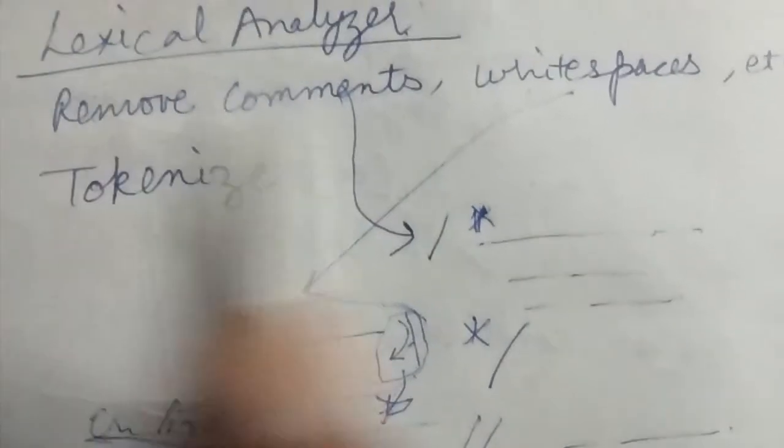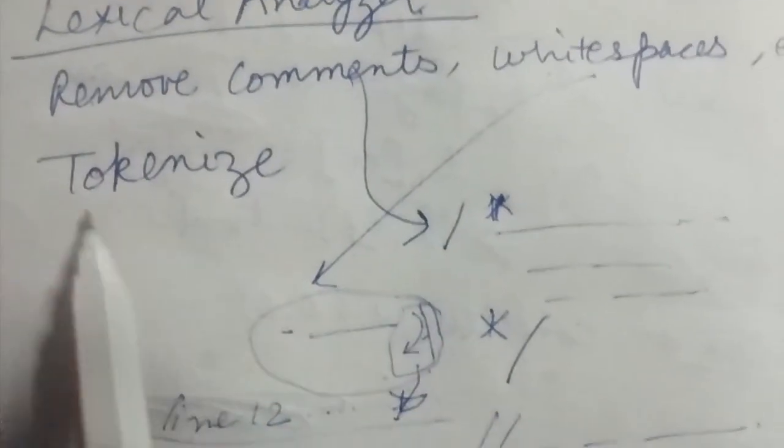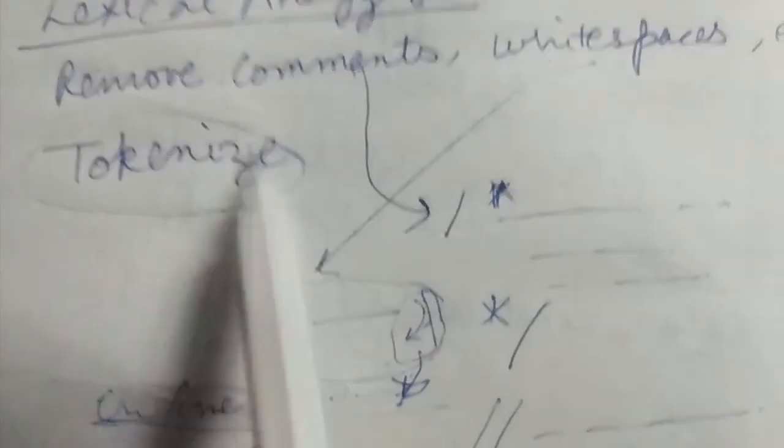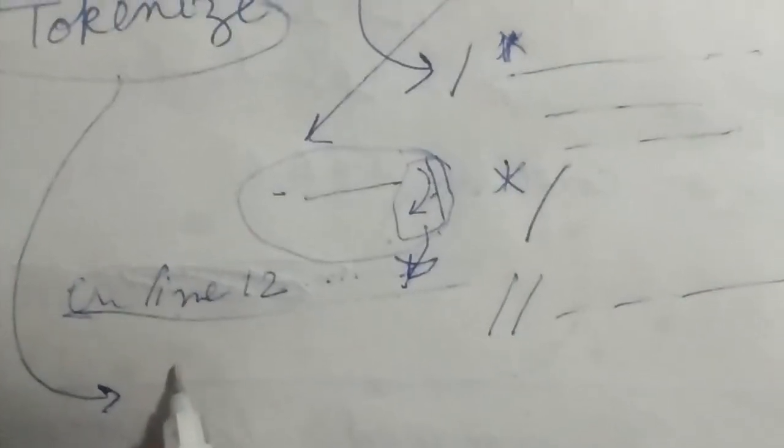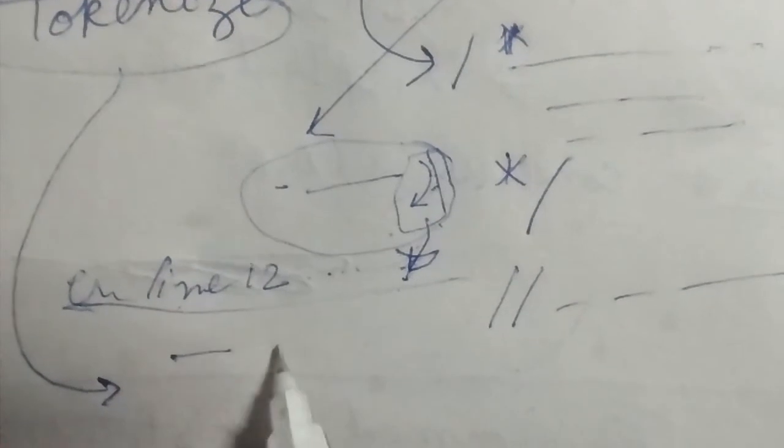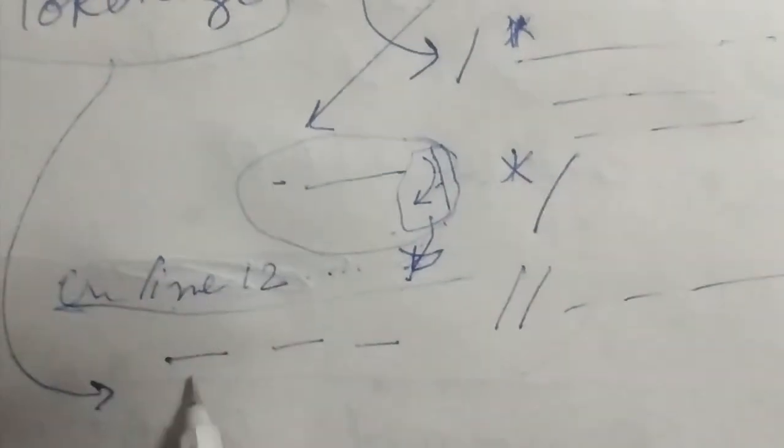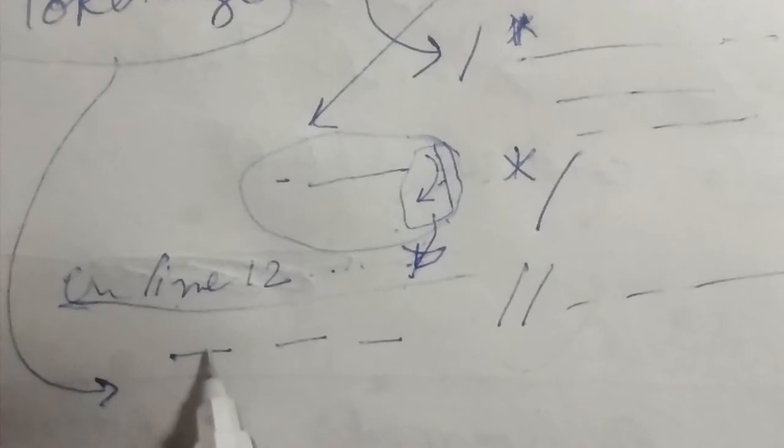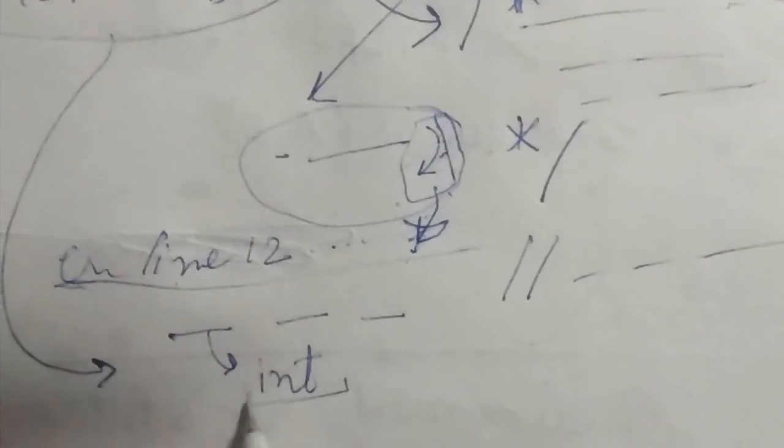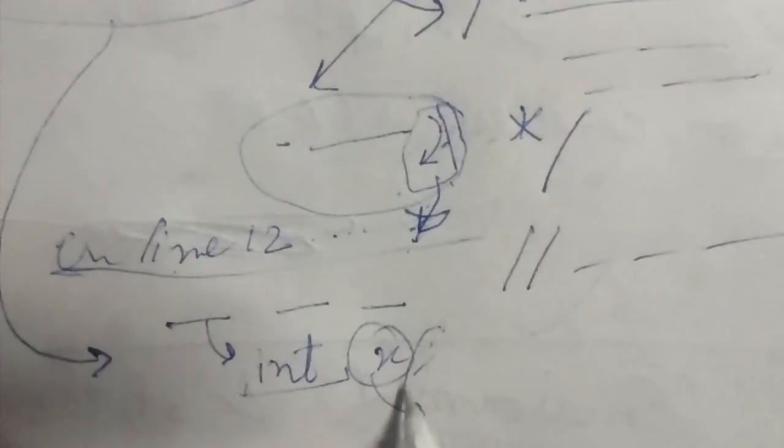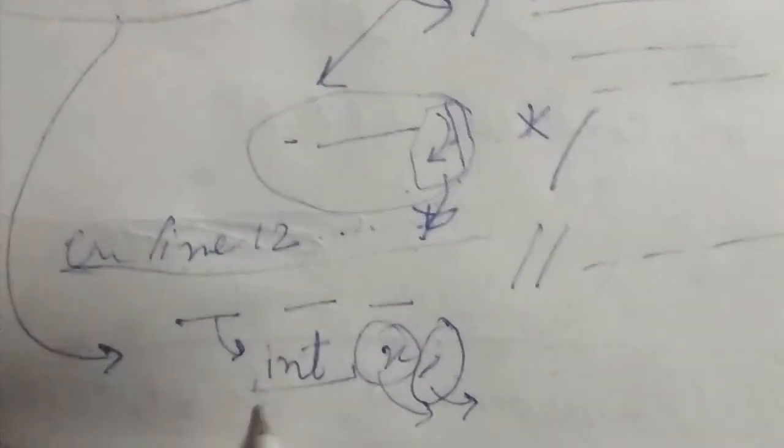The second task of a lexical analyzer is tokenization. It identifies which part of the input is what. For example, if 'int' is written, it identifies this as a keyword; 'x' is identified as an identifier; and a semicolon is recognized as punctuation. This is tokenizing the input.